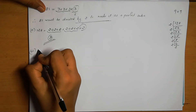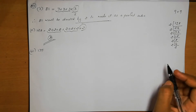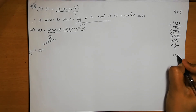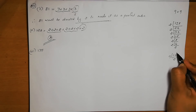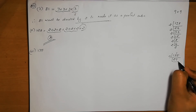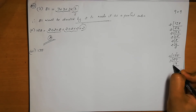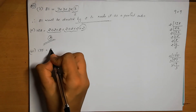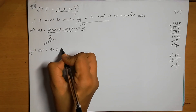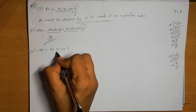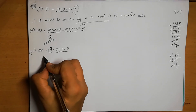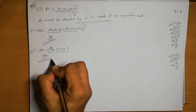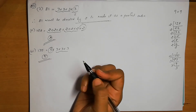Third number is 135. Its prime factors are 5 × 3 × 3 × 3. The three 3s form a triplet, but the 5 is extra with no pair. Therefore, 135 must be divided by 5 to make it a perfect cube.